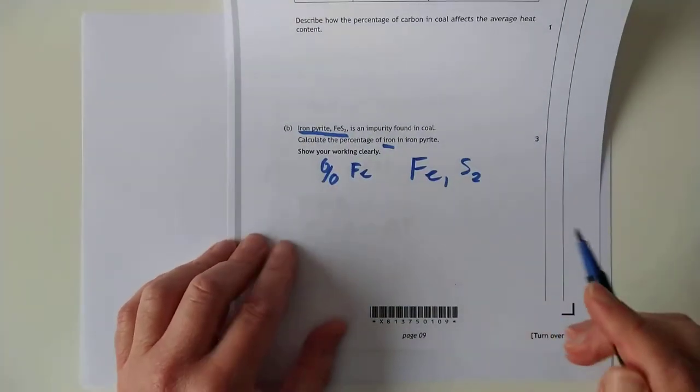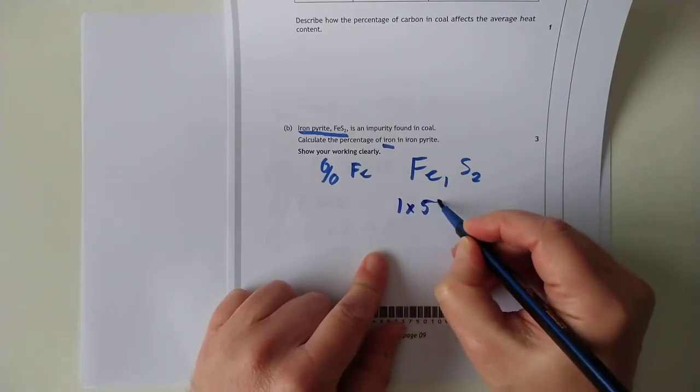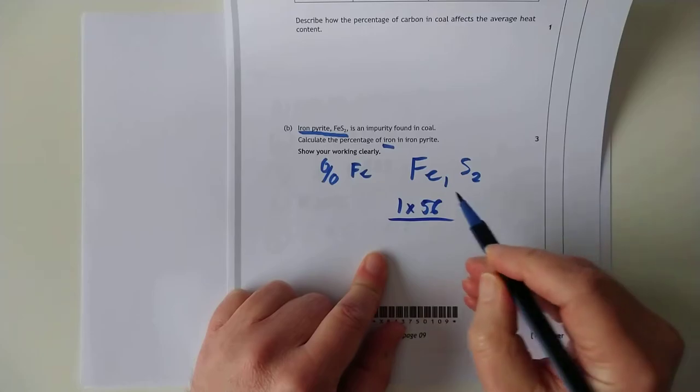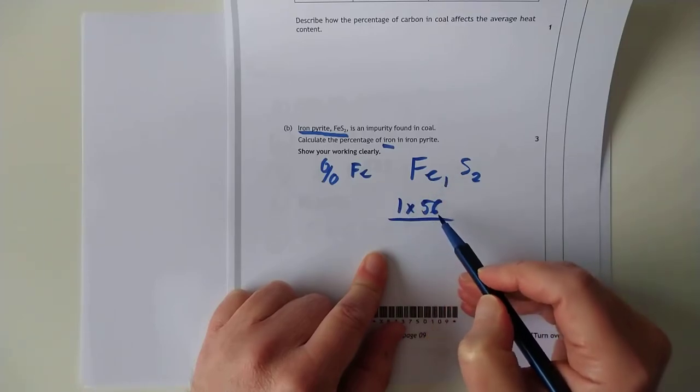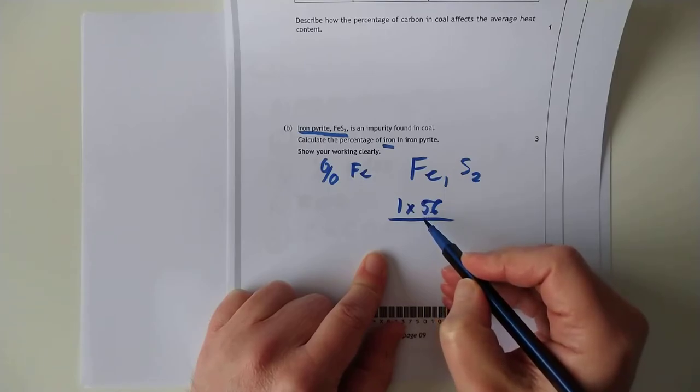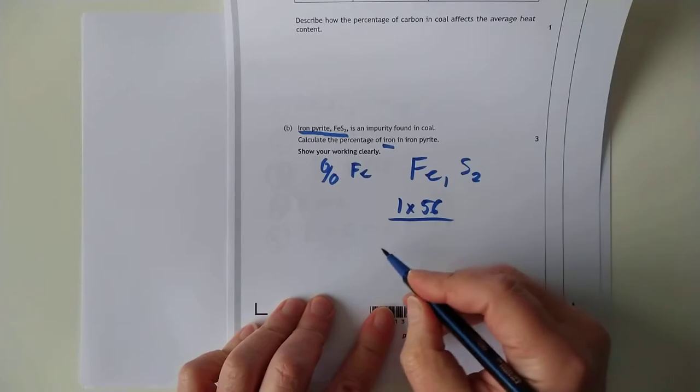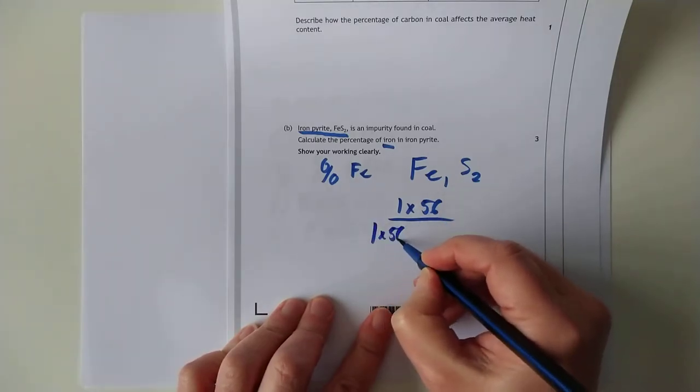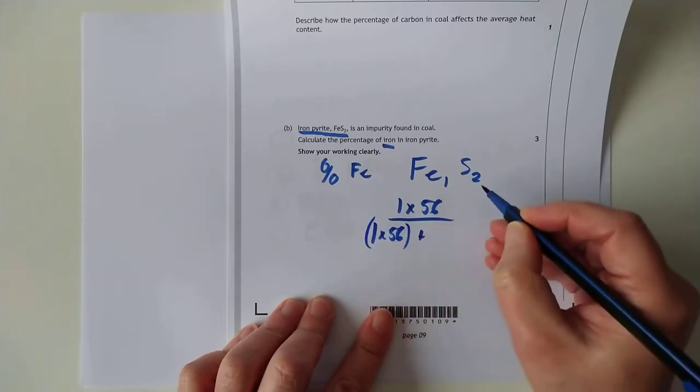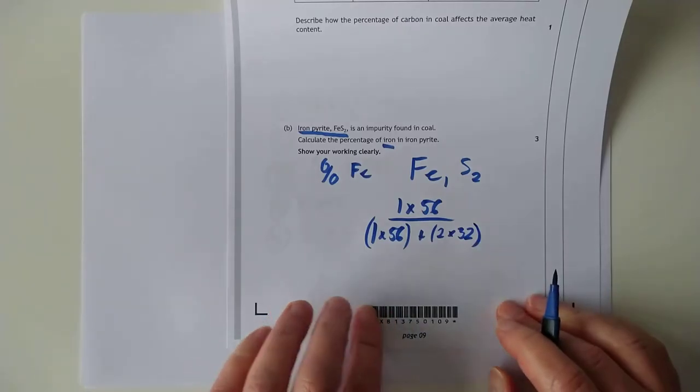So what we've got here, we've got the total mass of iron. So in this case, there's 1 times 56. That's going to be our top line. If it had been, say, Fe3, S2, you would have done 3 times 56. There is that little detail to watch for. Divided by the total of the whole compound, which is going to be 1 times 56 plus 2 lots of sulfur, which was 32, if you were paying attention.